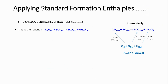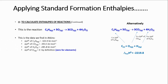Let's consider the reaction where we have propane gas reacting with oxygen gas to produce carbon dioxide gas and water. If we have the standard enthalpy change of formation of the components of this reaction — that is, for propane gas, oxygen gas, water, and carbon dioxide — then we will be able to calculate the standard enthalpy change for this reaction.